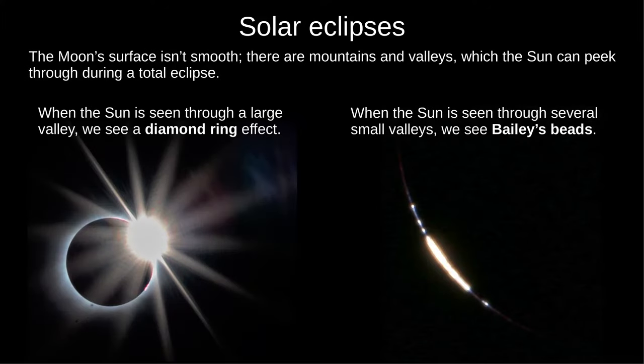Now, because the Moon has some quite big mountains, valleys, and craters, sometimes the Sun can peek through the valleys during a total eclipse. When the Sun peeks through one large valley, we see a diamond ring effect. And when the Sun is seen between several valleys and mountains, we see Bailey's beads. You should be able to sketch these in the exam.